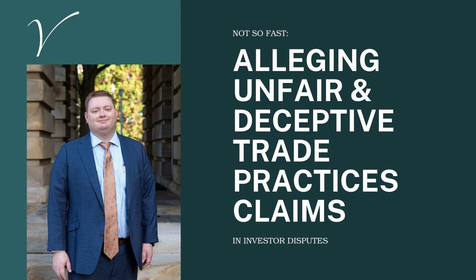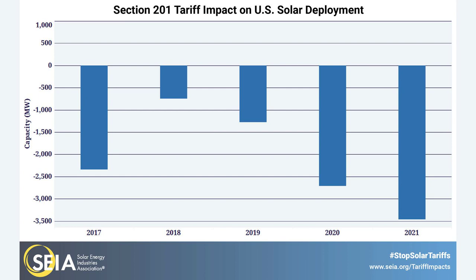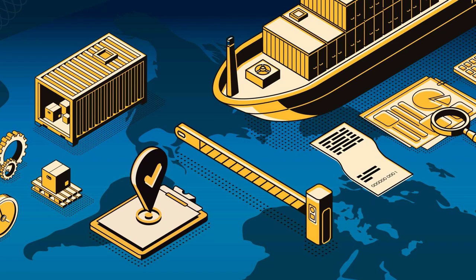In 1987, the US government launched an investigation into Japan's semiconductor industry, accusing Japanese companies of engaging in unfair trade practices and dumping products in the US market. This investigation led to the imposition of tariffs on Japanese semiconductor products, which had a significant impact on Japan's economy. The Japanese government responded by imposing its own trade barriers, further exacerbating the trade war.